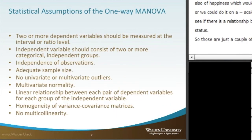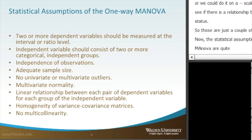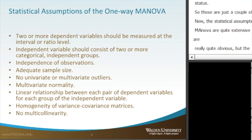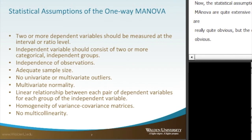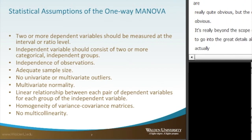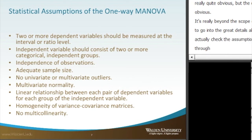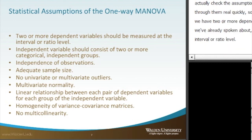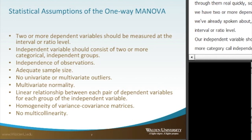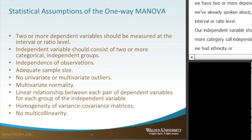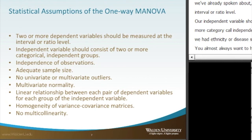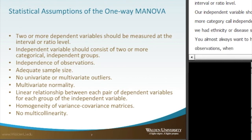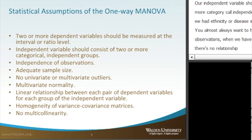The statistical assumptions for one-way MANOVA are actually quite extensive. Some are obvious, but others are not. We start with: you need two or more dependent variables measured at the interval or ratio level. The independent variable should consist of two or more categorical independent groups — just like we had ethnicity or disease status. You almost always want independence of observations when we have a test of means, meaning no relationship between the observations, unless we're doing something repeated or paired.